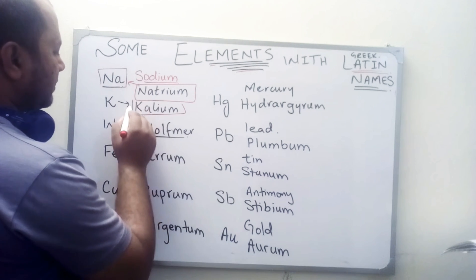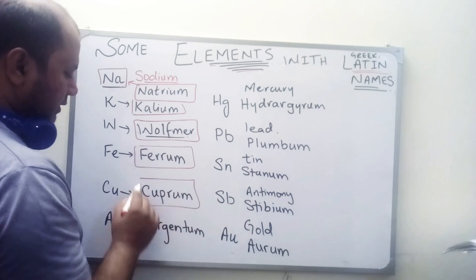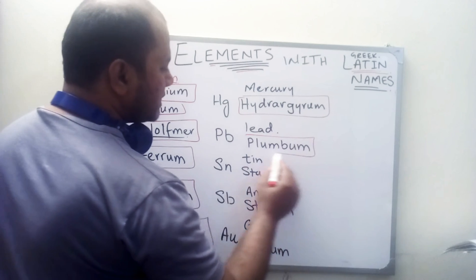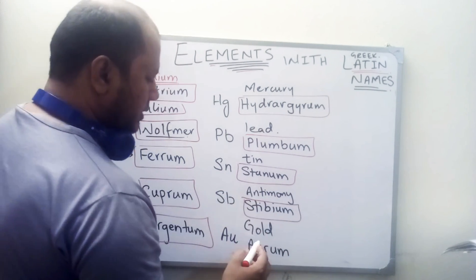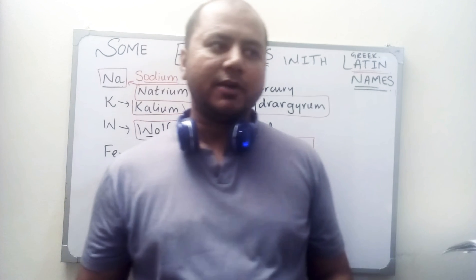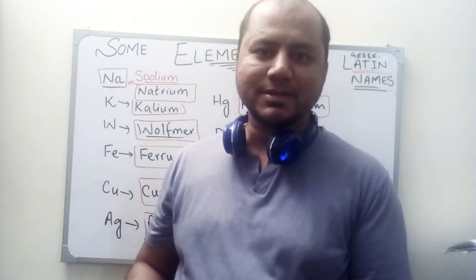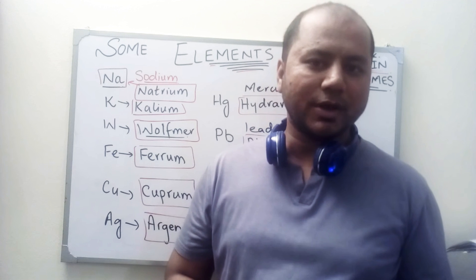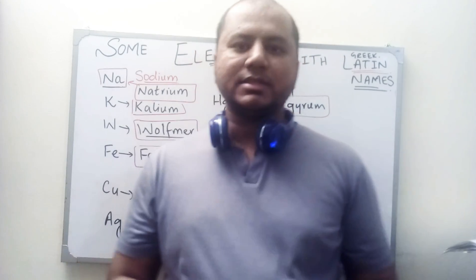So, to recap: Wolfram for tungsten, ferrum for iron, cuprum for copper, argentum for silver, hydrargyrum for mercury, lead with plumbum, stannum for tin, stibium for antimony, and aurum for gold. I hope I have helped you with those elements in the periodic table which have confusing symbols.